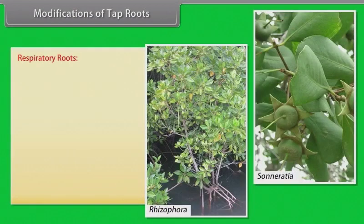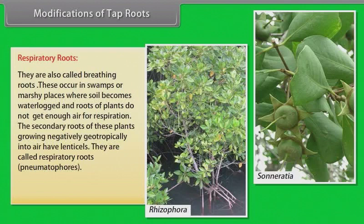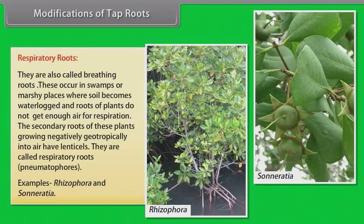Respiratory roots — also called breathing roots. These occur in swamps or marshy places where soil becomes waterlogged and roots of plants do not get enough air for respiration. The secondary roots of these plants grow negatively geotropically into the air and have lenticels. They are called respiratory roots or pneumatophores. Examples: Rhizophora and Sonneratia.